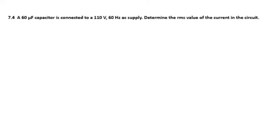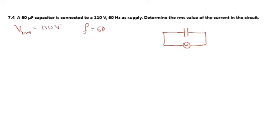Question 4: a 60 microfarad capacitor is connected to 110 volt, 60 hertz AC supply to determine the RMS value of current. Similar to the previous question but with a capacitor. V_RMS = 110 volt, frequency = 60 hertz, and capacitance = 60 × 10⁻⁶ farad.